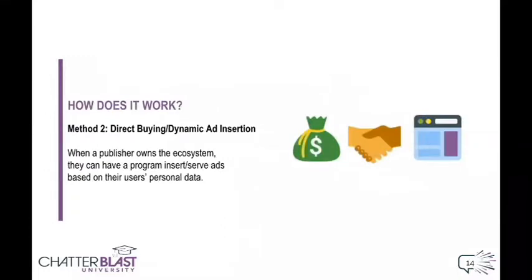The other way ads are served programmatically is through direct buying, also known as dynamic ad insertion. If I'm a publisher and I'm collecting data on the users of my website, I can use that data to sell my impressions directly to DSPs, clients, or agencies. This is another great way to protect brands, as publishers can ensure that clients' ads won't show up next to extreme or sensitive content.